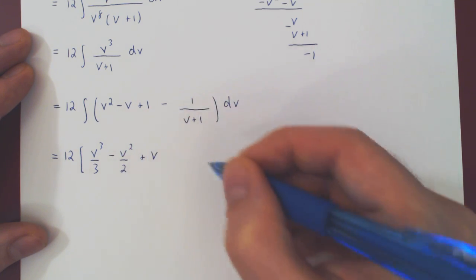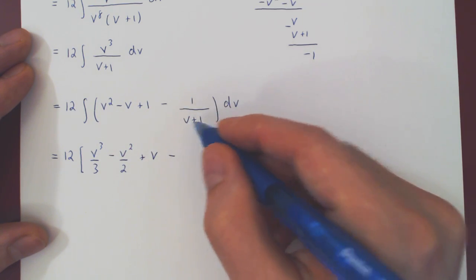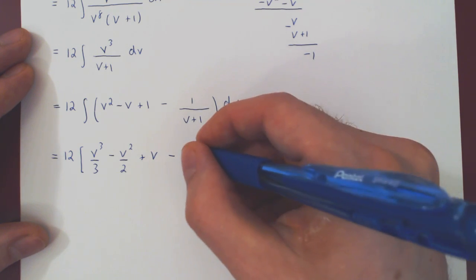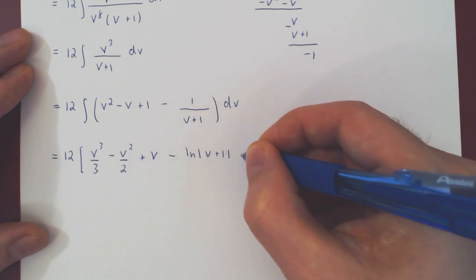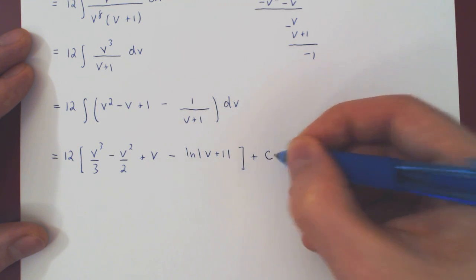And of course, the integral of one over v plus one with respect to v is simply the ln of v plus one in absolute value plus c.